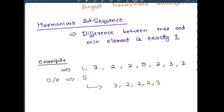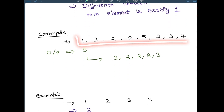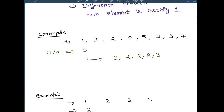What is the harmonious subsequence or array? Basically when you find the maximum and minimum their difference is exactly 1. In this particular array there is a subsequence which is [3, 2, 2, 2, 3]. This is your subsequence which is a harmonious subsequence. It has a length of 5, so the output is 5.